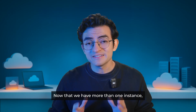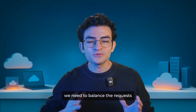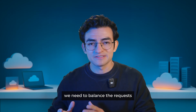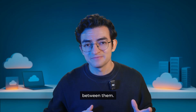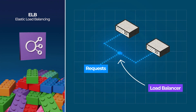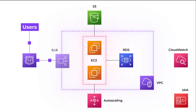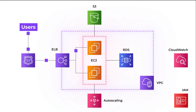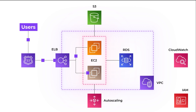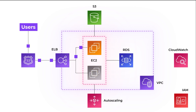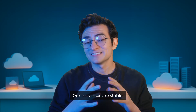Now that we have more than one instance, we need to balance the requests between them. Elastic Load Balancing, or ELB, distributes incoming traffic across multiple servers. The Load Balancer ensures that no single server gets overwhelmed. If a server fails, the Load Balancer stops sending traffic to it. Our instances are stable.